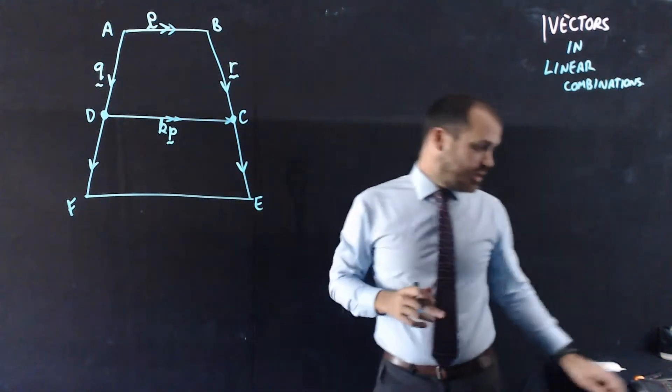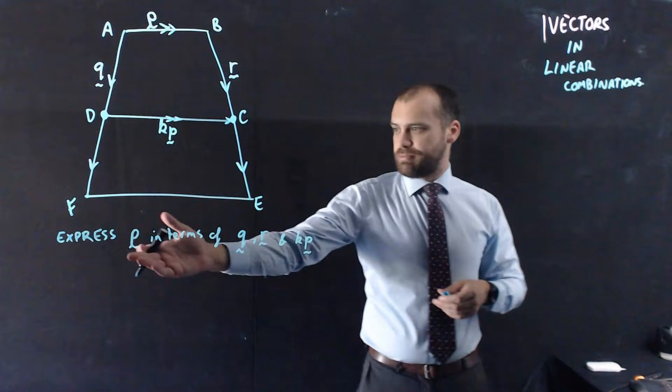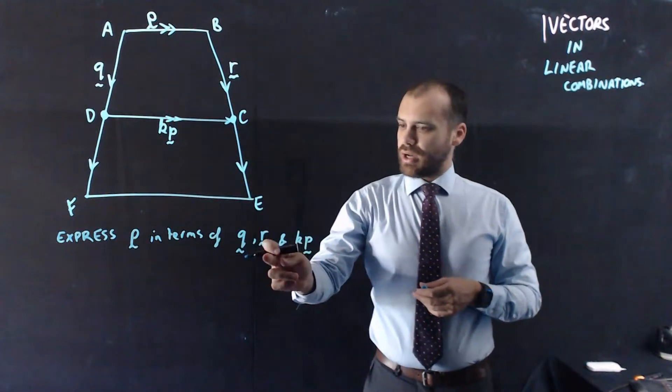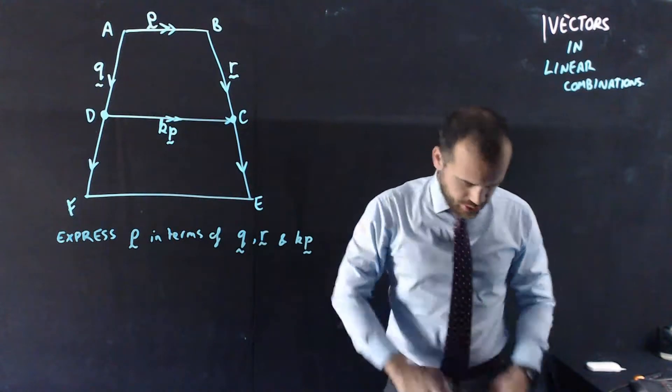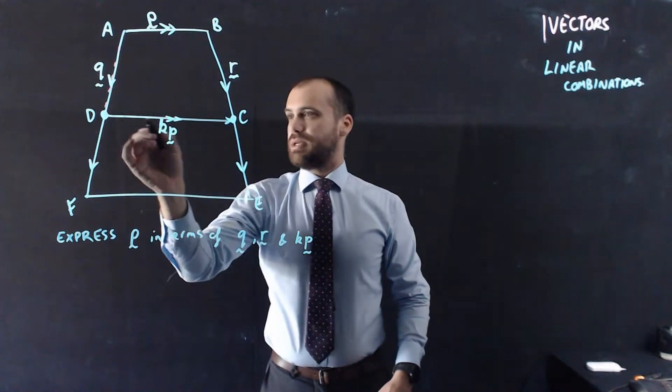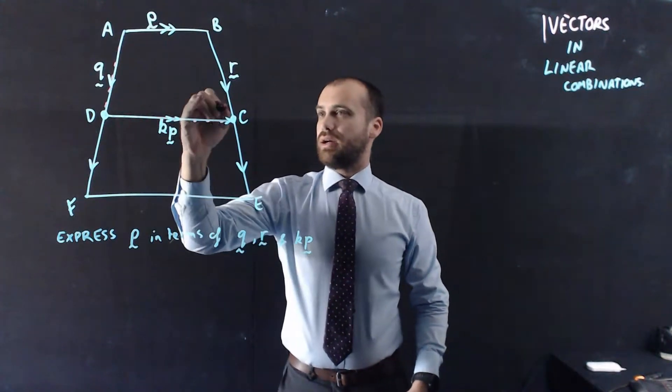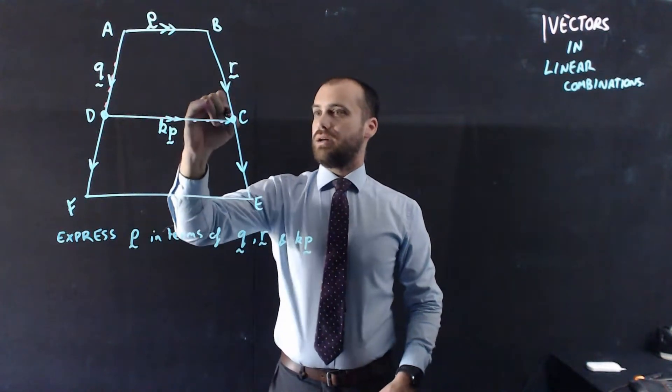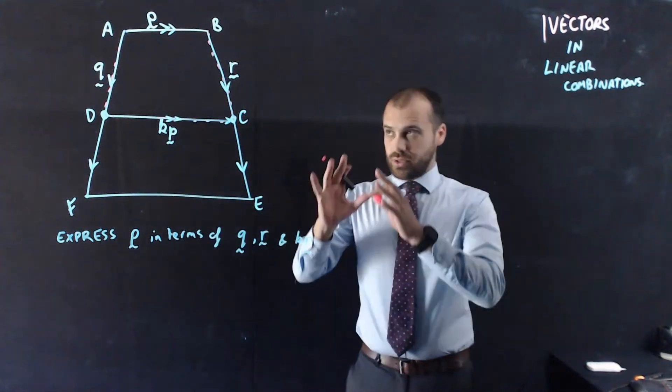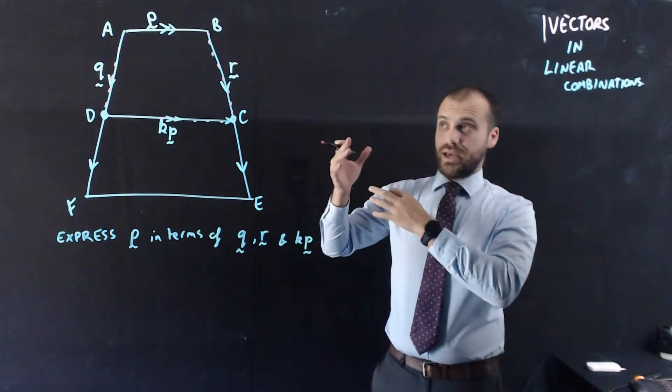Alright, so our first question here, express P, the vector P, in terms of Q, R, and KP. Alright, so Q is this bit here, KP is this bit here, and R is that bit there. Alright, so we need to sort of add those three together to get P.